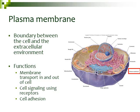The last part of the endomembrane system is the plasma membrane. Eukaryotic cells also have a plasma membrane — just as prokaryotic cells do. The plasma membrane is the boundary between the cell and the external environment, telling you what's inside the cell versus what's outside. The functions of the plasma membrane include membrane transport (moving things in and out of the cell), cell signaling via receptors, and cell adhesion — helping cells stick together to form tissues.